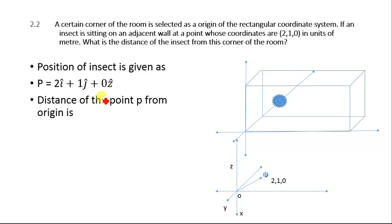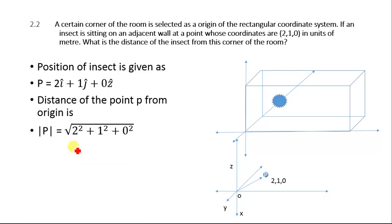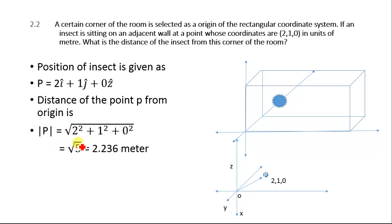Using the Pythagorean theorem, the distance from the origin is the square root of 2 squared plus 1 squared plus 0 squared, which equals 2.236 meters.